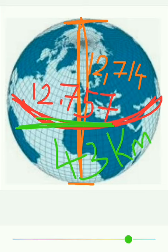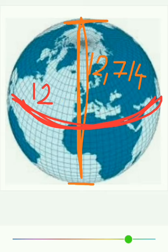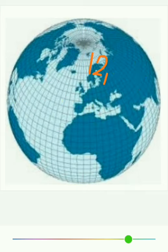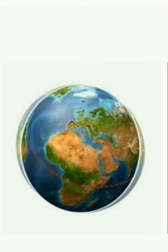From this, we say that the equatorial part of Earth is greater compared to the polar diameter of the Earth. The polar diameter is less than the equatorial diameter by 43 kilometers. It denotes that the Earth is spherical in shape.